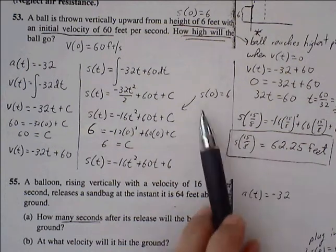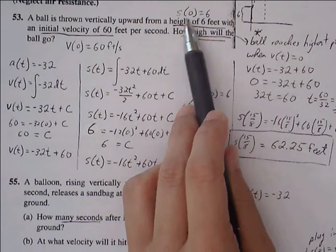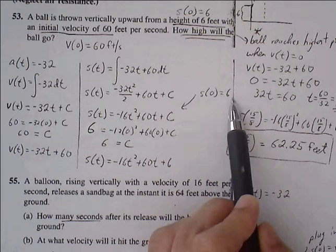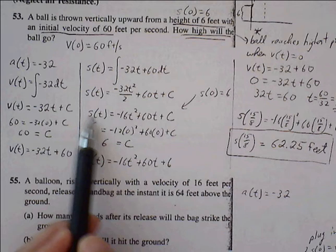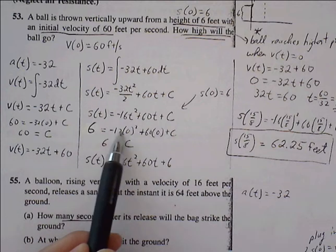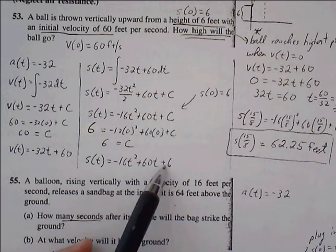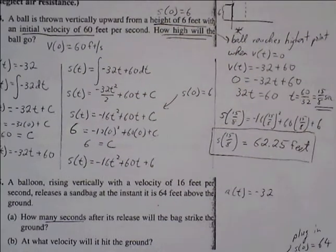We can substitute. We have information about our position function. So plug 0 in for time t, plug 6 in for s(t). So 6 equals 0 plus 0 plus C, so C is equal to 6. So now we have our updated position function.